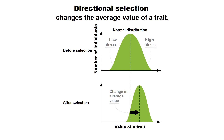It turns out that there are variations of natural selection. One of those is directional selection, and this will change the average value of a trait. You can see the graphs — before selection you see a normal distribution, and after natural selection has acted on a population, the average value of that trait has changed over time.